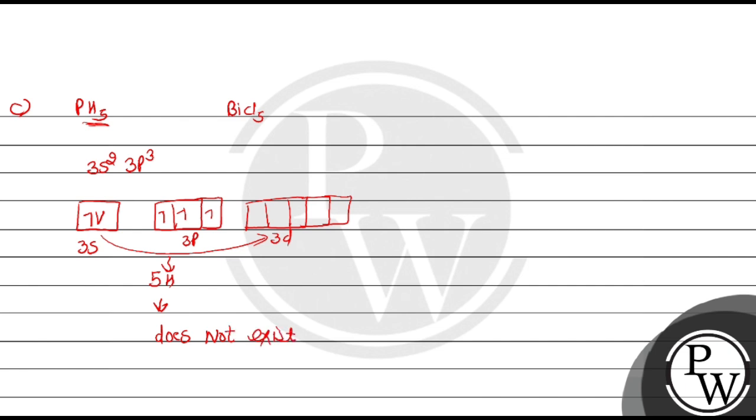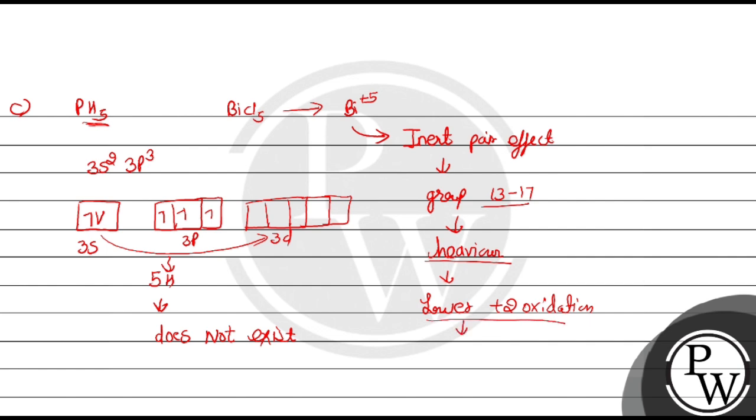Now we will talk about BiCl5. Bismuth +5 oxidation state does not exist due to inert pair effect. What is the inert pair effect? In group 13 and group 17, if you go down the group, elements will be heavier with no excitation and will show lower +2 oxidation state. That means this will not exist.